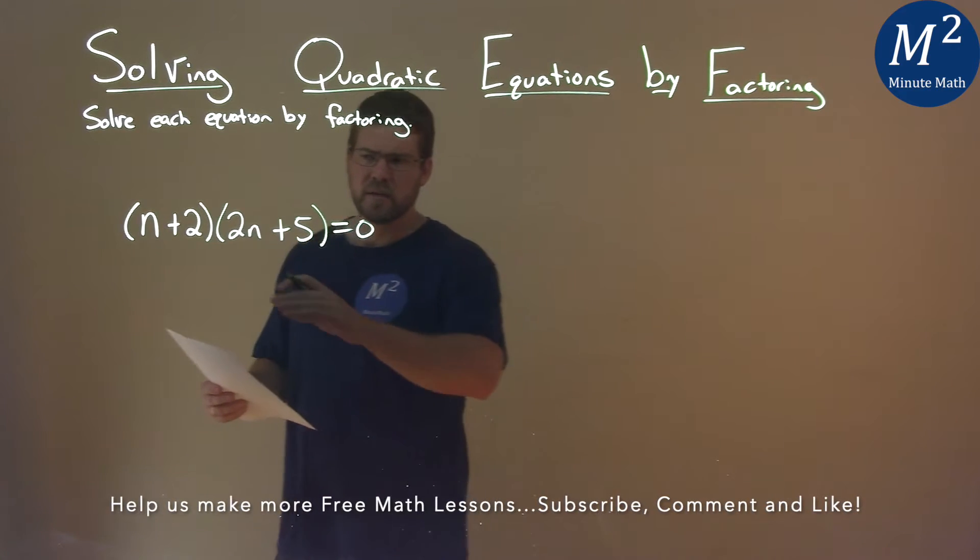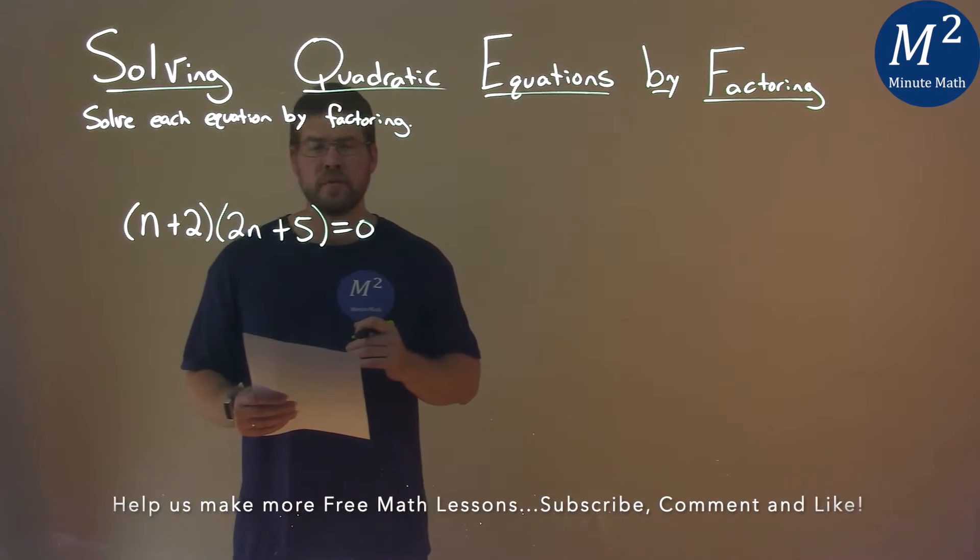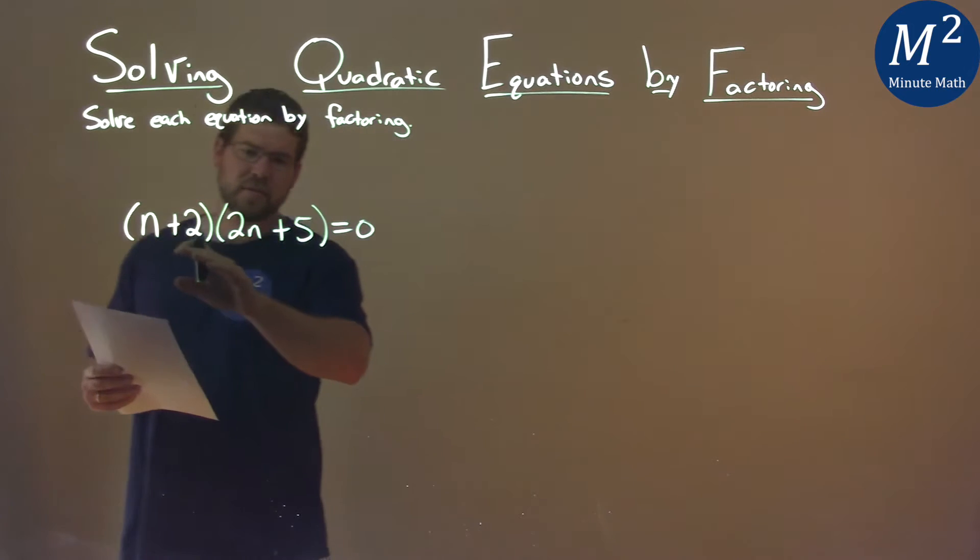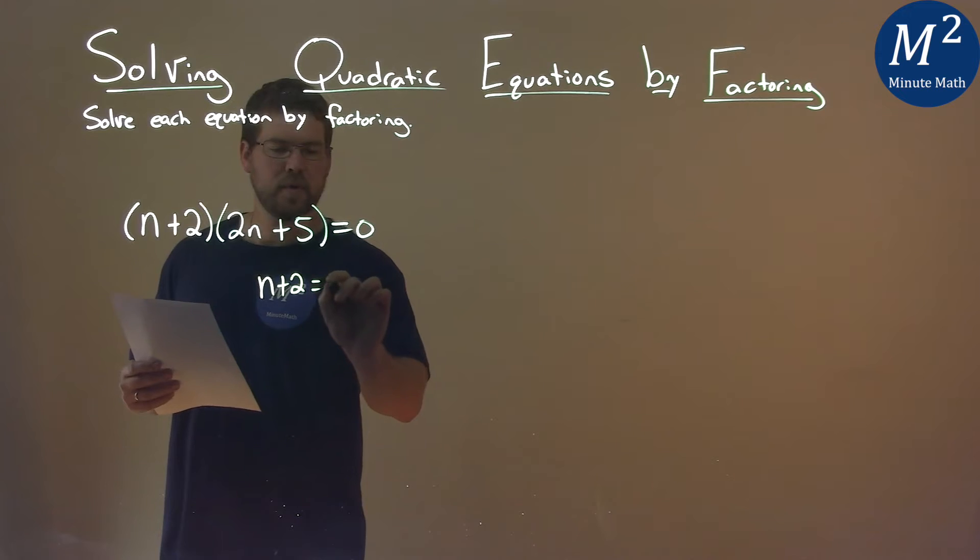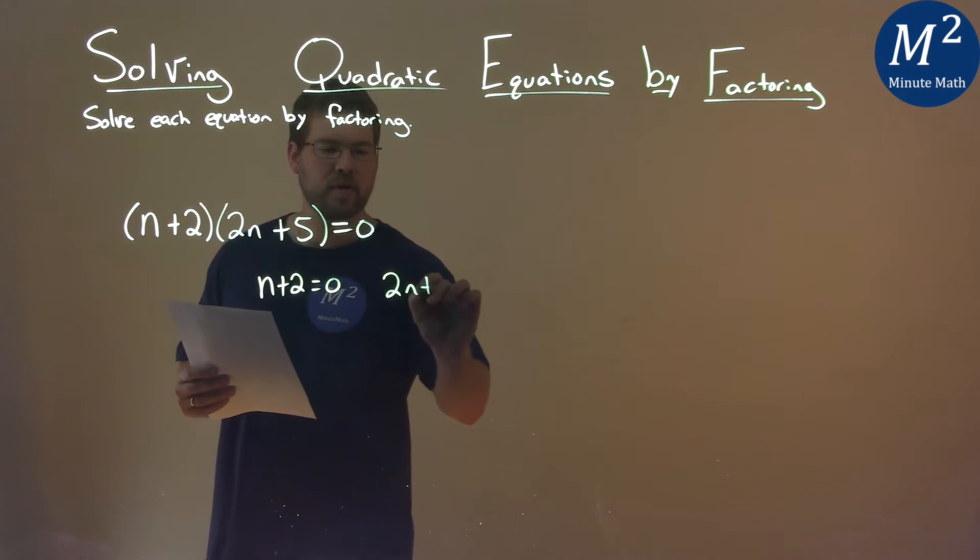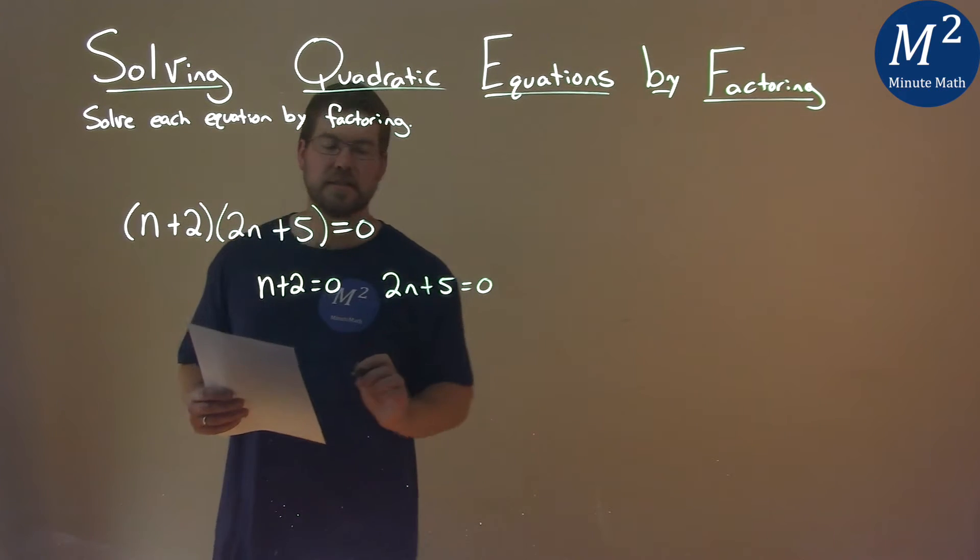Well, luckily, we're already in factored form. So, since it's equal to 0, we can set both parts equal to 0. We have n+2 = 0 and 2n+5 = 0.